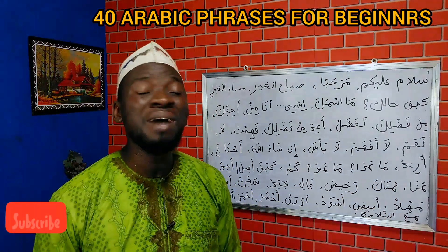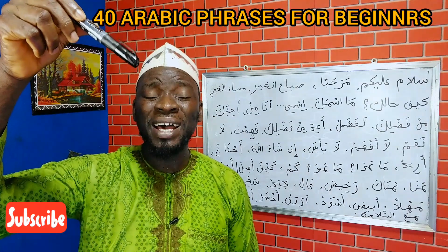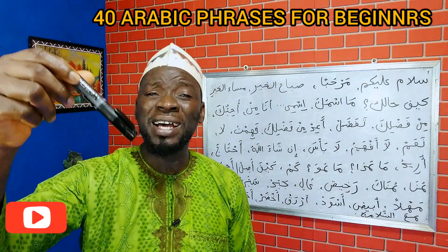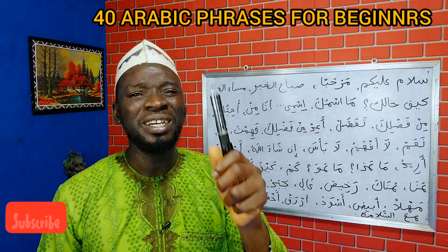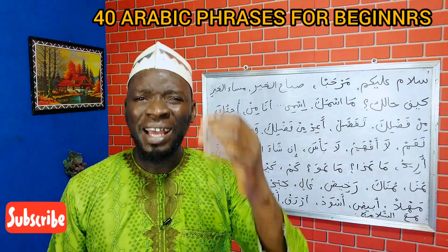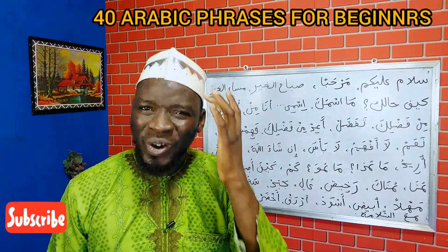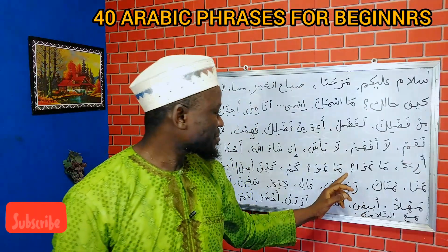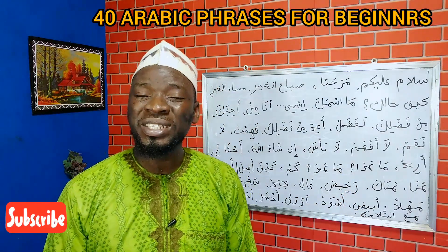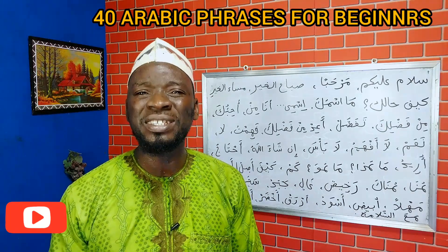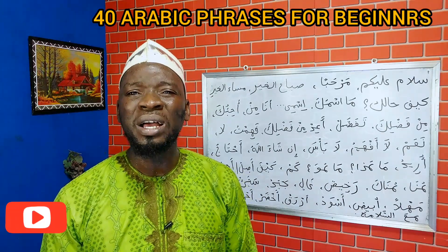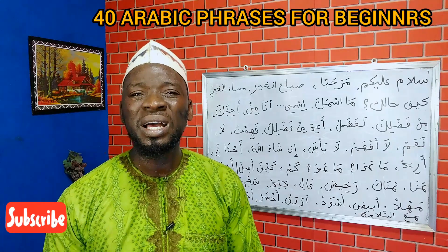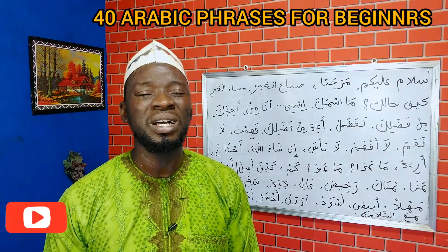The next word is mahatha, meaning what is this. Mahatha biyari — what is this in my hand? Haatha kalamun — this is a pen. Hathihi kalansuwa — this is a cap. Then mahuwa means what is it or what is something.